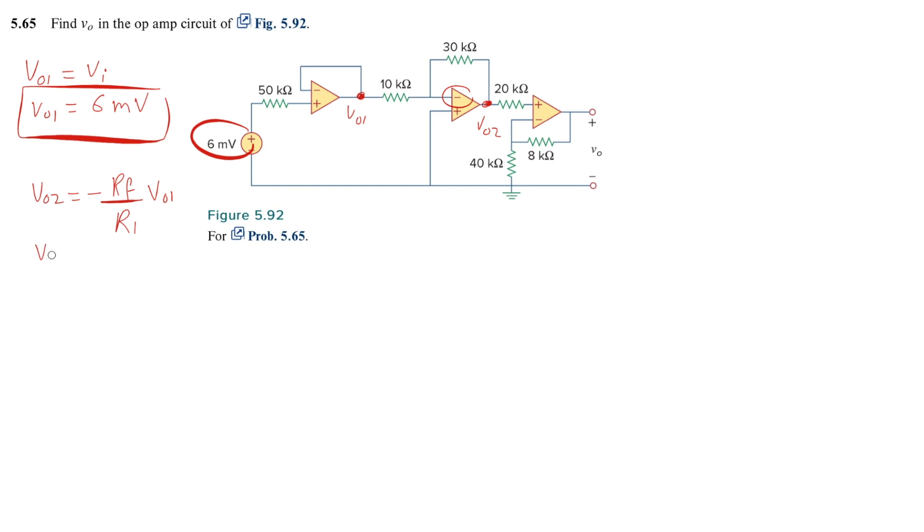So V₀₂ is minus what is RF? 30K over R₁ which is 10K times 6 milli. The answer is minus 18 millivolts. This is your V₀₂.